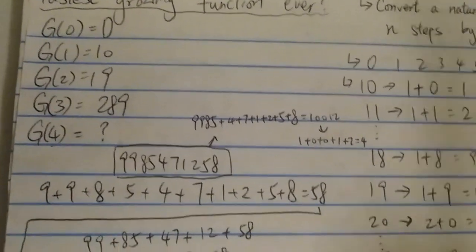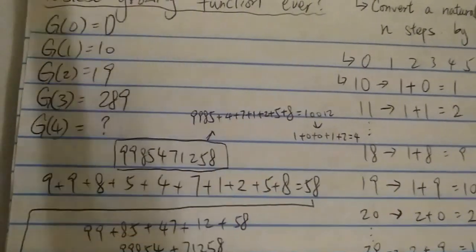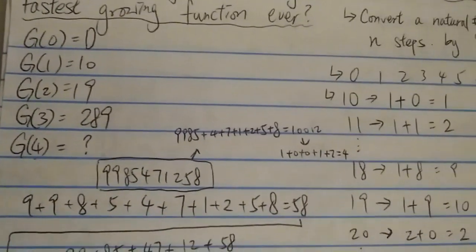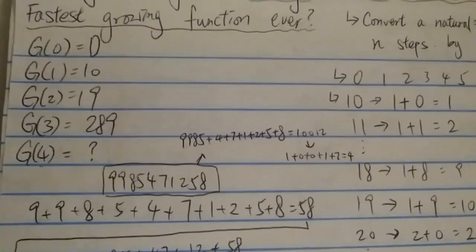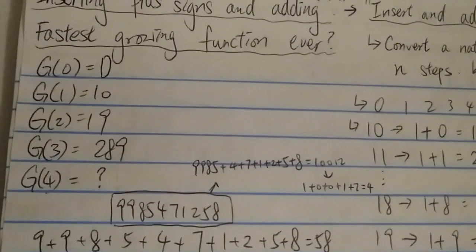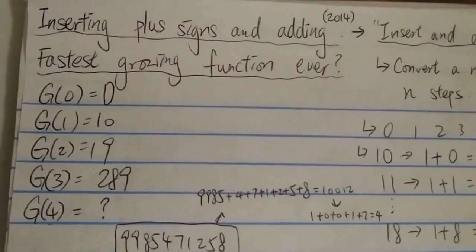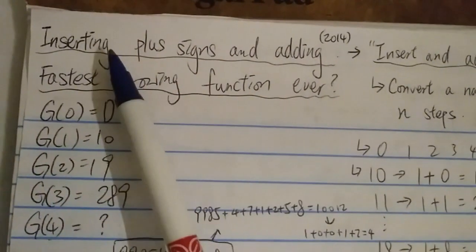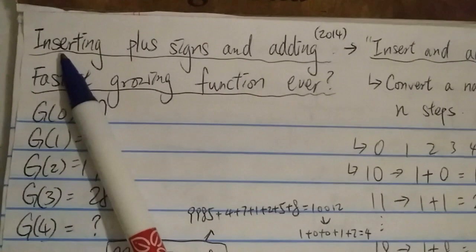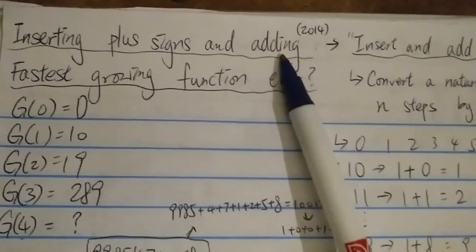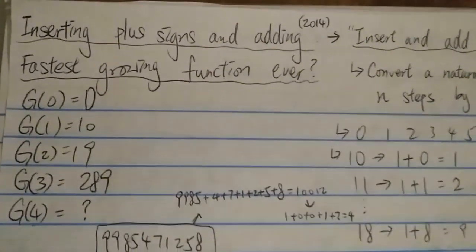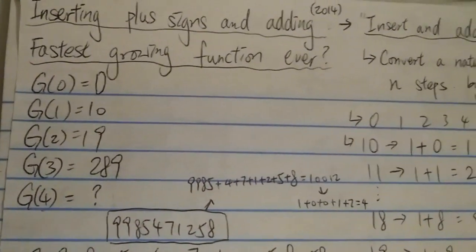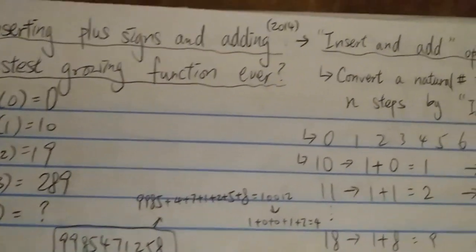Anyway, this is something pretty mind-blowing, which actually came from none other than the famous mathematician Ron Graham. And this is actually related to the problem which is called the inserting plus signs and adding. So if you want to know what's going on, just keep watching.